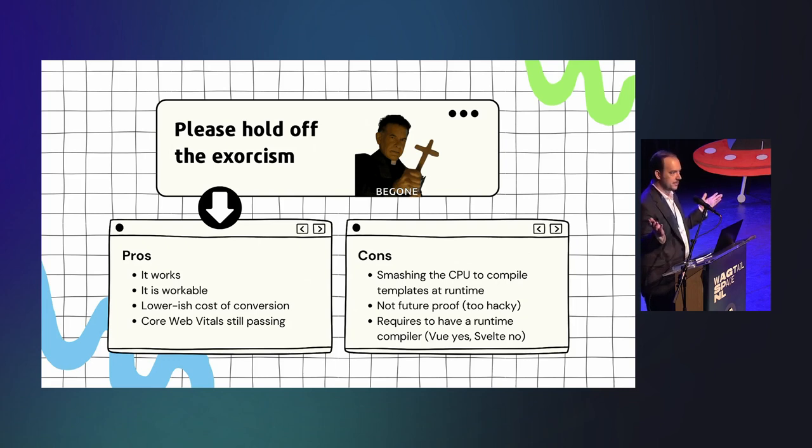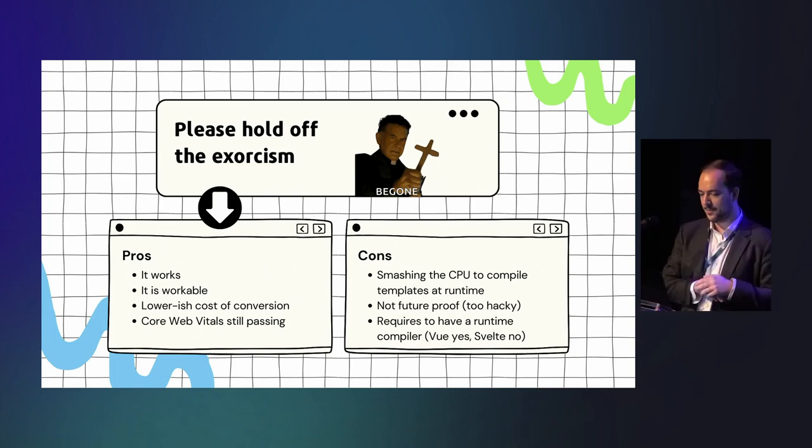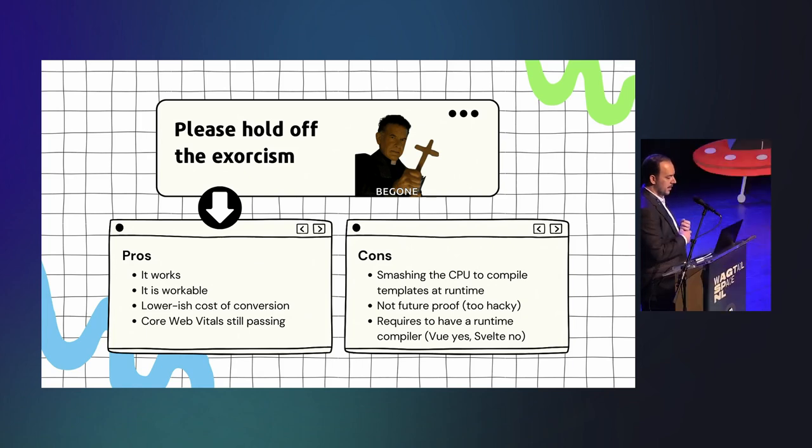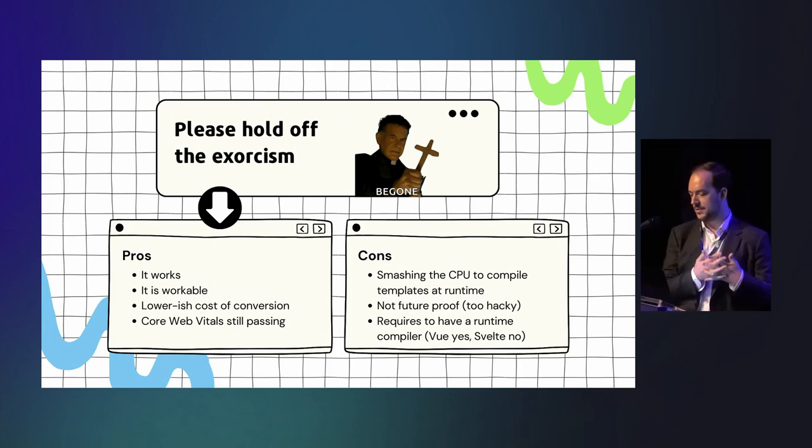But, pros and cons, right? Pros, it works. So, as long as it works, right? It is workable in the sense that it's not creating tremendous amounts of technical debt. You can deal with it. It's not blowing up over time. It's scaled without being annoying. I mean, without getting more annoying than it is initially. It's lowering the cost of converting an existing project into Nuxt project, and you can still get the core web vitals passing. So, that's really not that bad. It's kind of a trade-off that sounds a bit demonic, but it's okay.